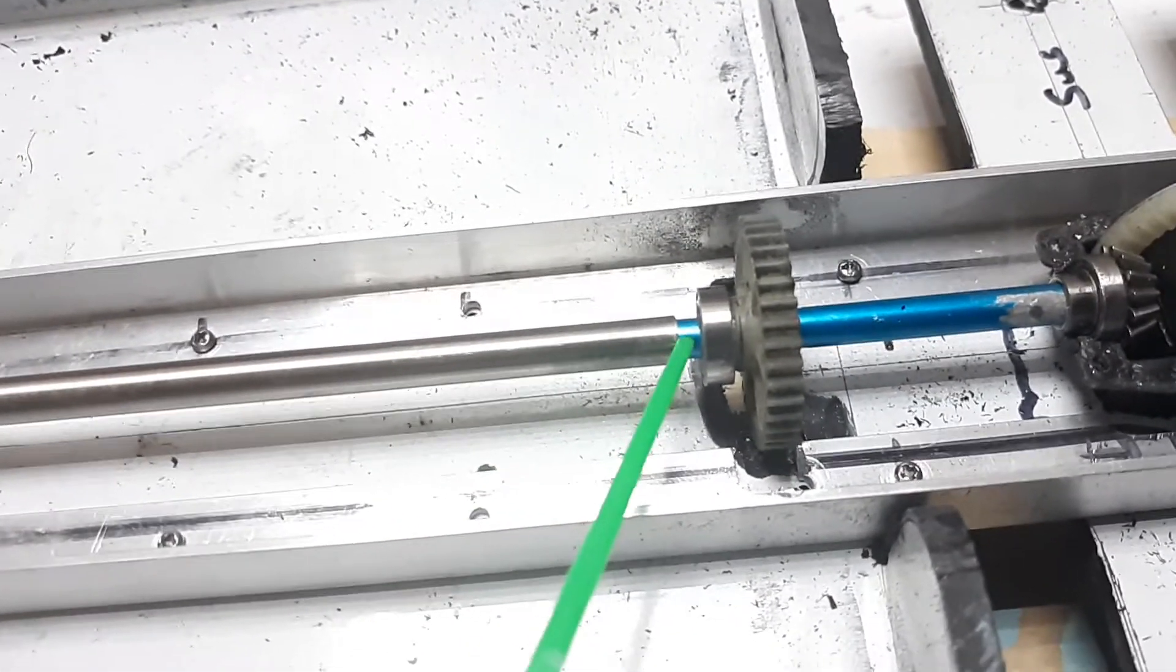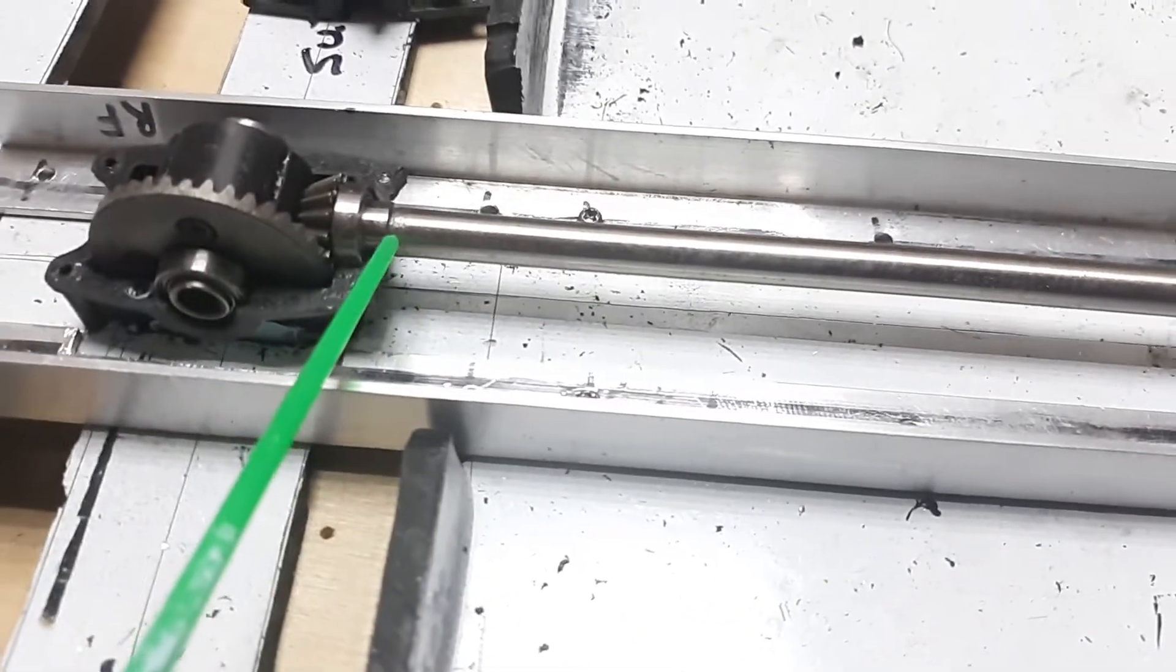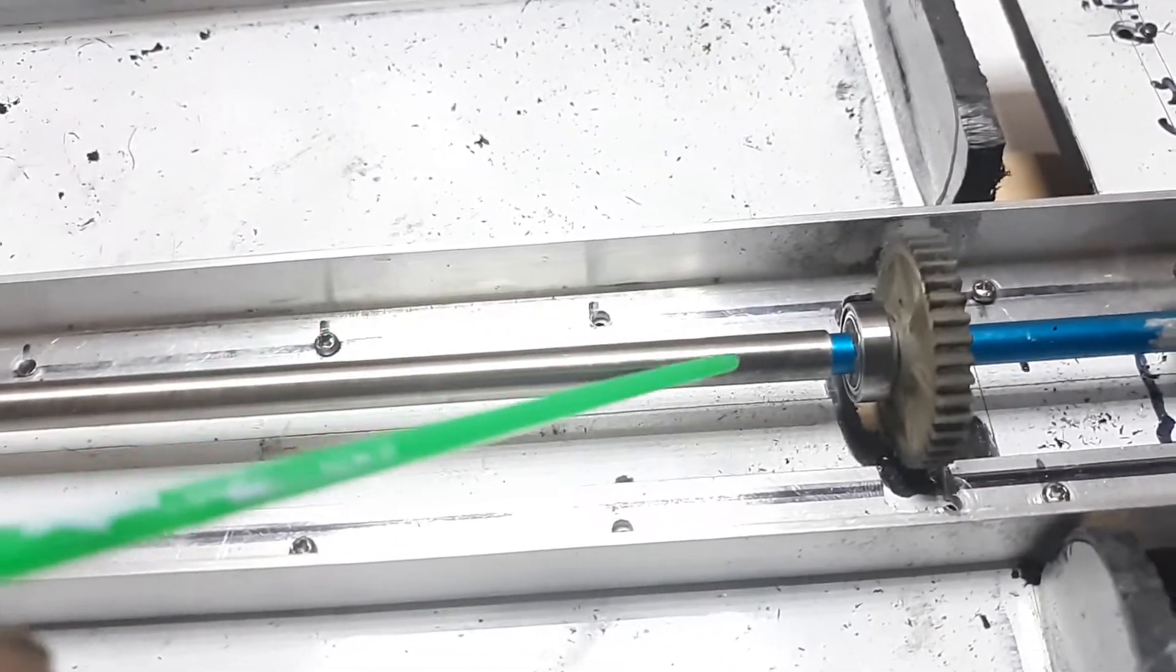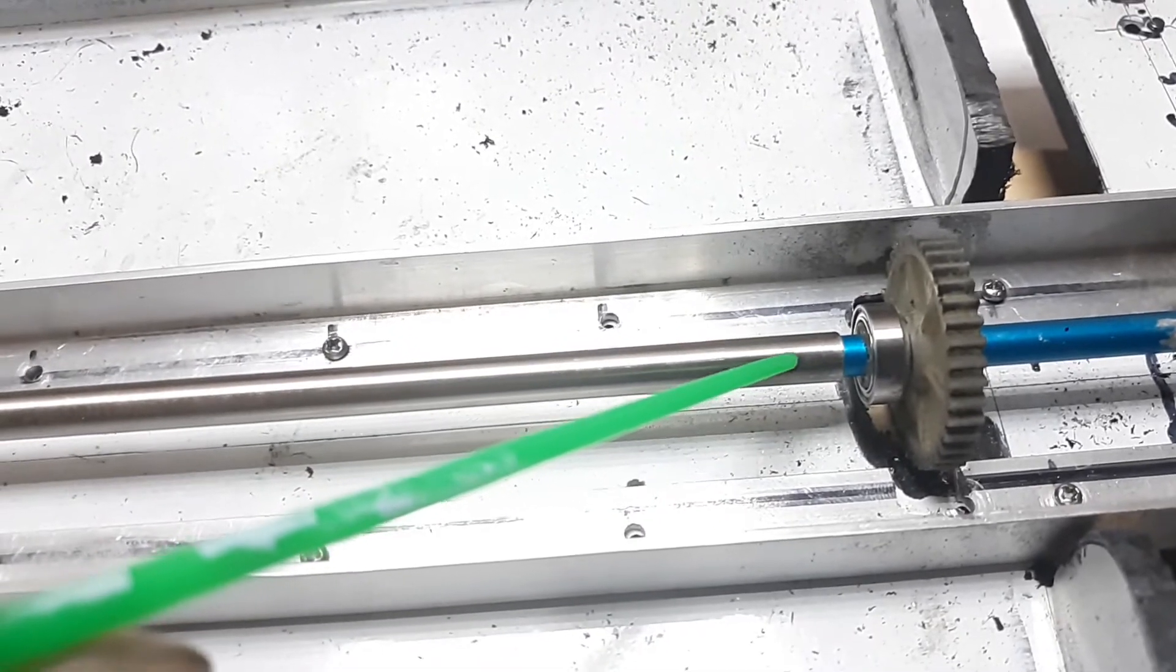Separate it a little bit, apply some Loctite, let it dry overnight. Come back the next day and you can drill a small hole about a quarter of an inch away.